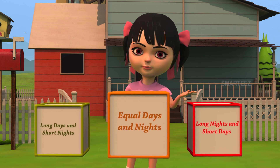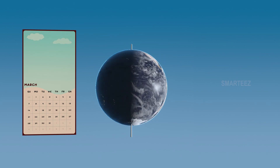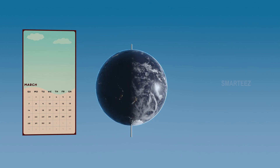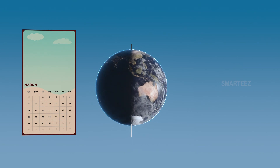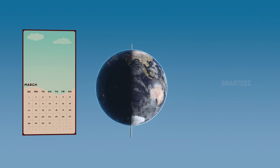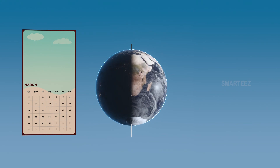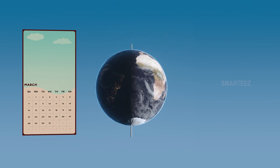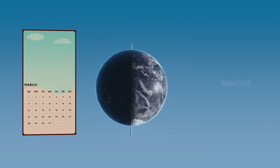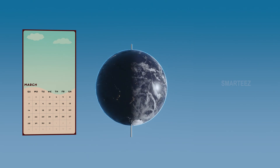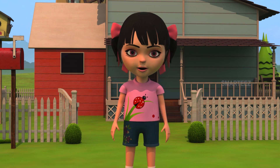Let's take a look! We now see how the sun's light falls equally on the two halves of the earth on March 21st. On this day, both hemispheres will receive equal amounts of light — that's called equinox. Equinox means equal day and night. That's all folks! Have a nice day!